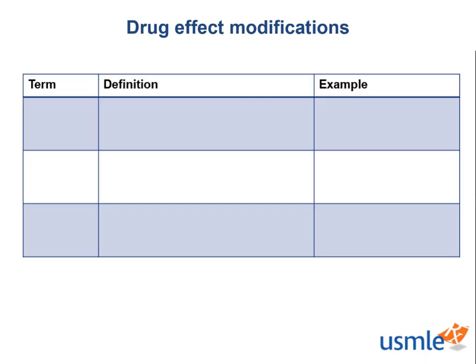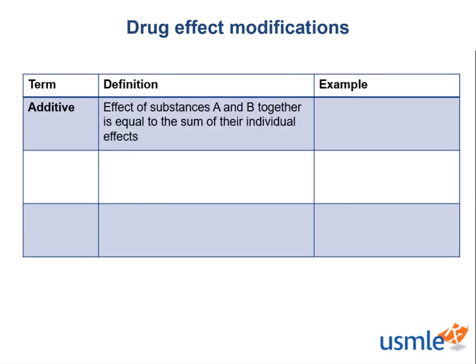The first term we're going to discuss is additive. This is defined as the effect of substances A and B together is equal to the sum of their individual effects. For example, aspirin and acetaminophen have their own individual effects, and when taken together, their effects add up. In mathematical terms, we can say 2 plus 2 equals 4.